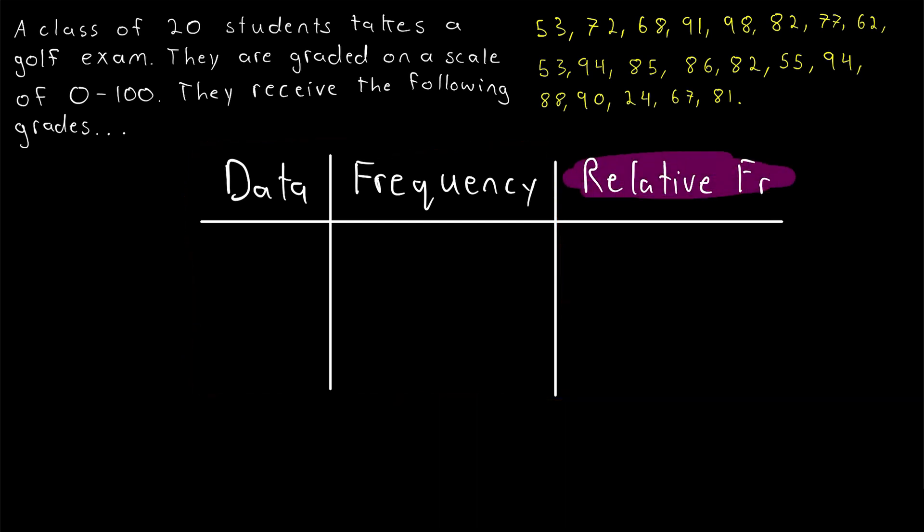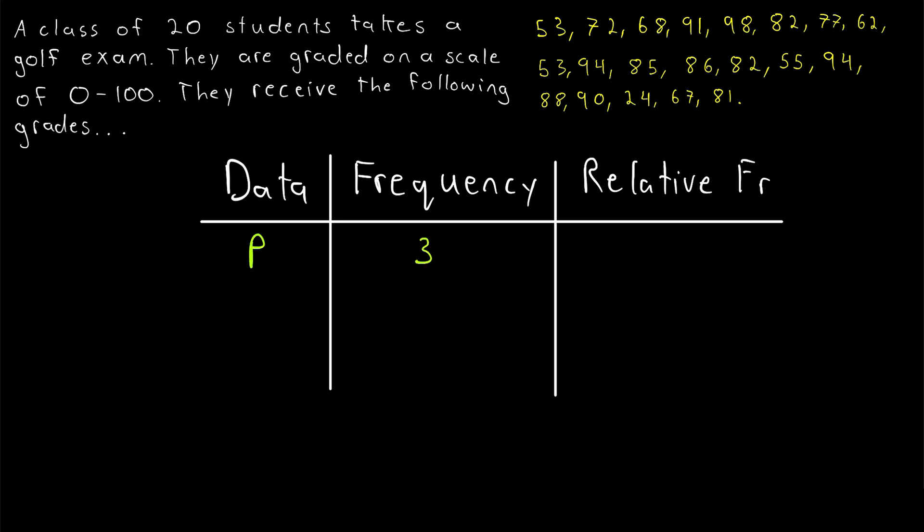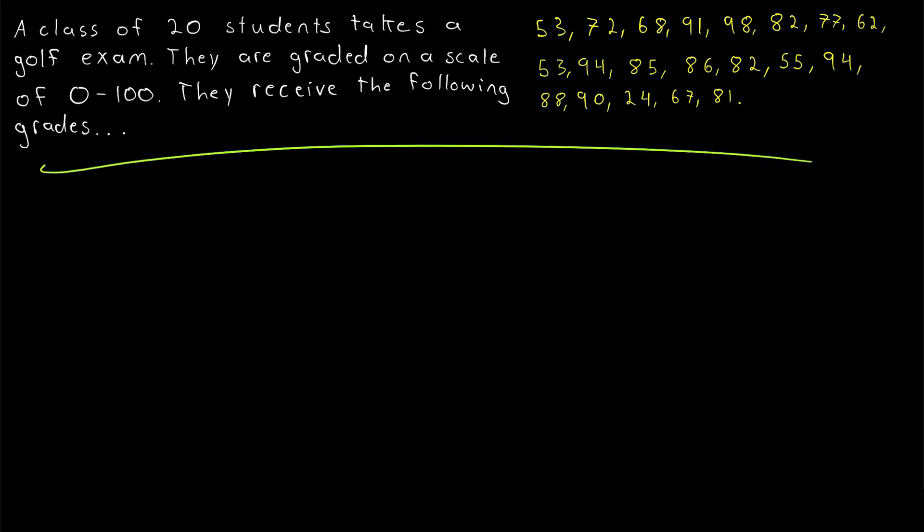And then nice and easy, the last column that makes this a relative frequency table is the relative frequency column. In this column, we simply take the frequency of each data point or data interval and divide it by the total number of data points. This gives us the frequency of a particular data point relative to the total number of data points, thus the relative frequency. For example, if the data point p has a frequency of 3 and the total number of data points is 10, then the relative frequency of the data point p is p's frequency, 3, divided by the total number of data points, 10. 3 divided by 10, which is 0.3. So 30% of all the data points were data point p. But if that's all a little too abstract for you, just hold on and let's get into this actual example.